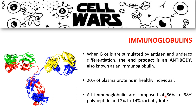All immunoglobulins are glycoproteins. Most are composed of 86 to 98 percent polypeptide, with about 2 to 14 percent carbohydrates. That is how specific the percentage of structural components is in our immunoglobulins or antibodies.